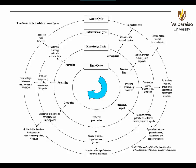In this introductory video, we will explain the scientific publication cycle using this diagram. Its purpose is to model how scientific knowledge is generated and communicated. Even though publication formats and avenues of access will change with technology, the process of developing scientific knowledge will not.